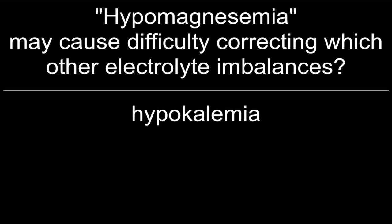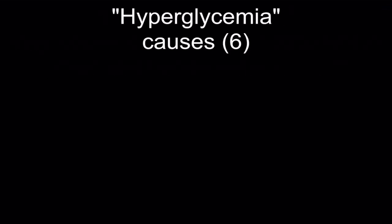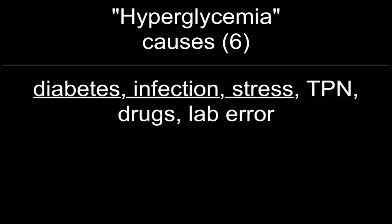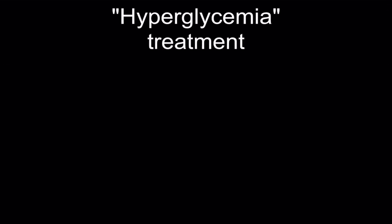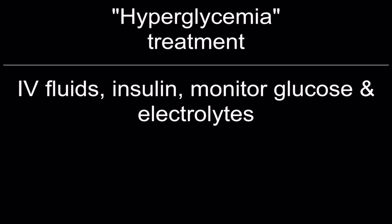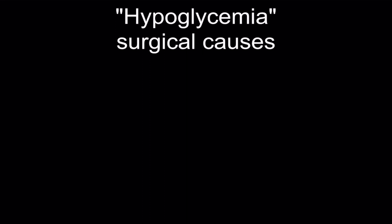Top six causes of hyperglycemia: diabetes, infection, stress, total parenteral nutrition, drugs, and lab error. Signs and symptoms: polyuria, polydipsia, confusion, coma, hypovolemia, ileus, DKA, abdominal pain, and hyporeflexia. Treatment: IV fluids, insulin, monitor glucose and electrolytes.